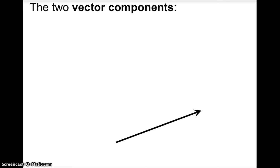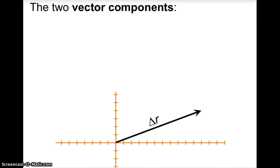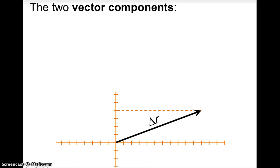Vector components — that's what we're thinking about. Here's a two-dimensional vector. Let's use displacement — two-dimensional displacement. We can imagine x and y axes. When we trace over to the y-axis, we see that this vector only extends or stretches so far on the y-axis. And if we trace down to the x-axis, we see this vector only extends or stretches so far along the x-axis.